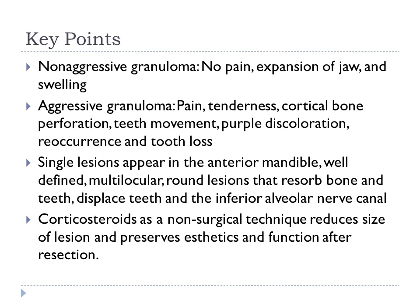To recap key points: non-aggressive granulomas usually show no pain but do show expansion of the jaw and swelling. Aggressive granulomas present with pain, tenderness, cortical bone perforation, teeth movement, purple discoloration, recurrence, and tooth loss. Single lesions typically appear in the anterior mandible and are well-defined, multilocular, round lesions that resorb bone and teeth and displace the inferior alveolar nerve canal. For treatment, corticosteroids as a non-surgical technique reduce the size of the lesion and preserve aesthetics and function prior to resection.